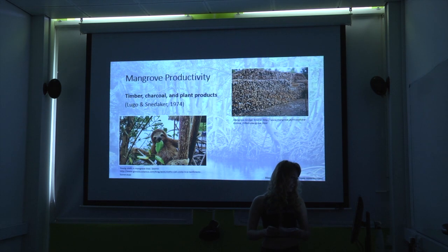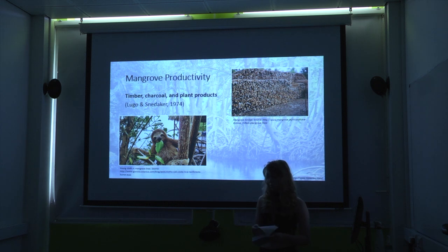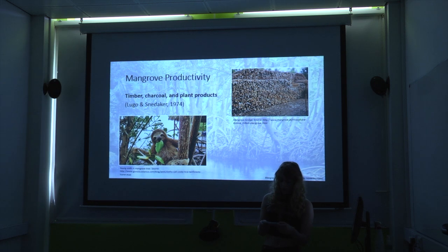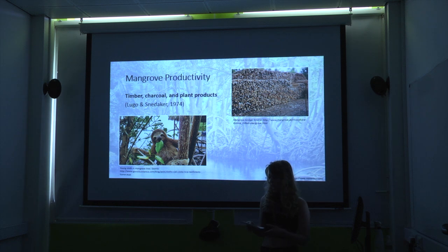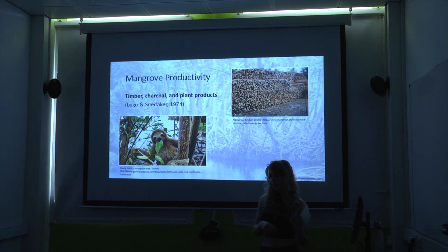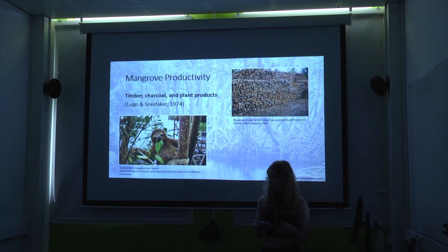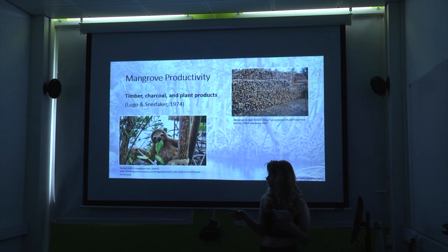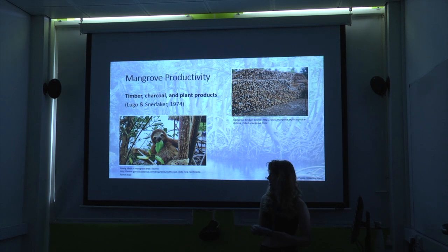Moving on to mangrove productivity. The three main things humans can get from mangrove forests are timber, charcoal, and plant products. Mangrove wood is extremely valuable because it's resistant to rot and insect damage, so many coastal indigenous communities use it for construction and fuel. These communities also collect plants from the mangrove forest for medicinal purposes and use mangrove leaves as animal feed.